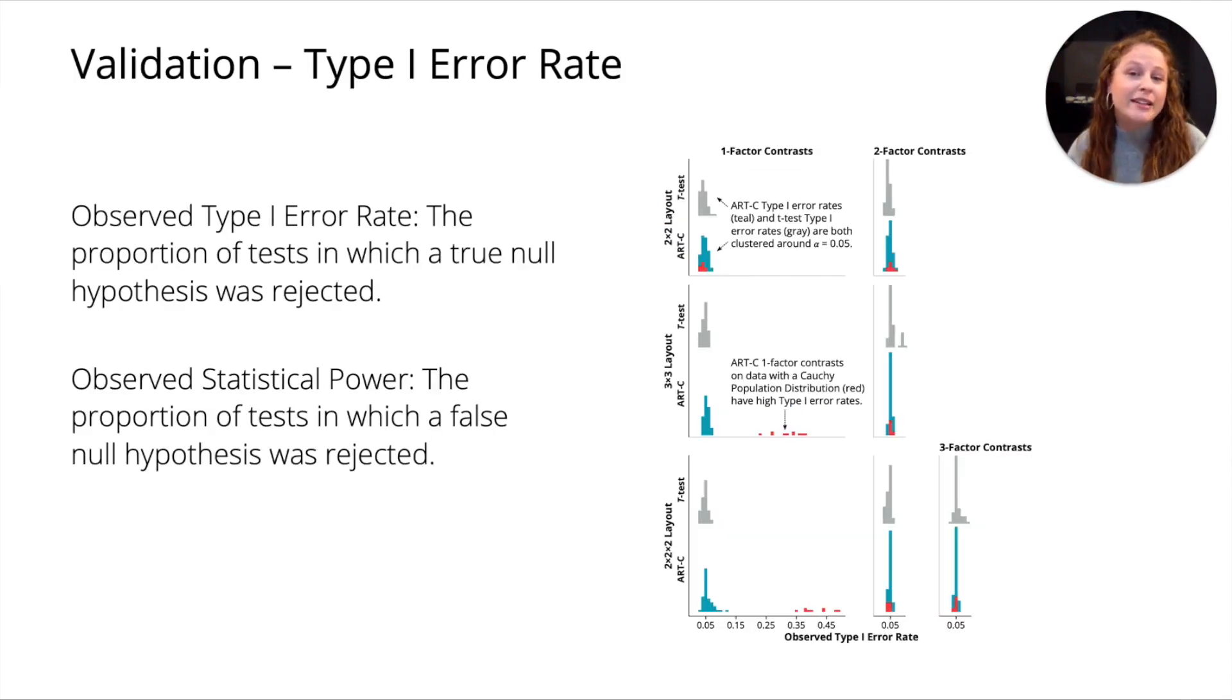Now I need you to believe me that our method worked. We validated our method on 72,000 synthetic data sets. To create those data sets, we varied different properties systematically but randomly. We varied things like the type of distribution the data was drawn from, the number of samples per condition, the layout whether it was 2x2 data or 3x3 data, whether the data was between or within subjects, etc. We evaluated our method on two metrics: observed type 1 error rate and observed statistical power. We did this because we followed common practice within the statistics literature.